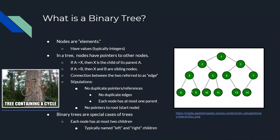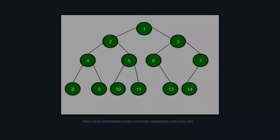All the leaves on the bottom — 8, 9, 10, 11, 13, and 14 — have zero children. Nodes 6 and 7 only have one child. The other nodes have two children. This is a valid binary tree because not only does it satisfy the conditions for a general tree — no duplicate pointer references and no pointers to the root — but it also satisfies the condition of each node having at most two children.